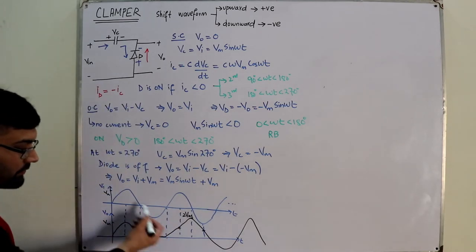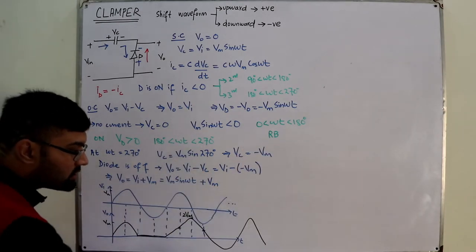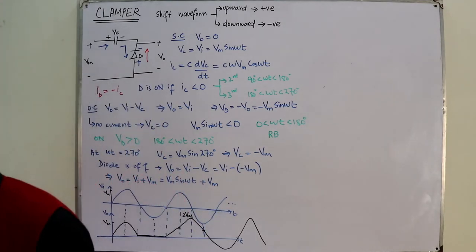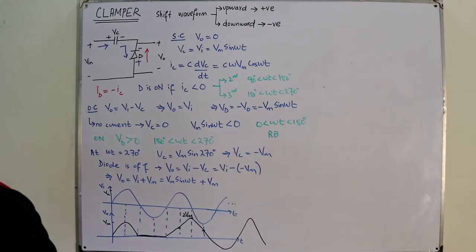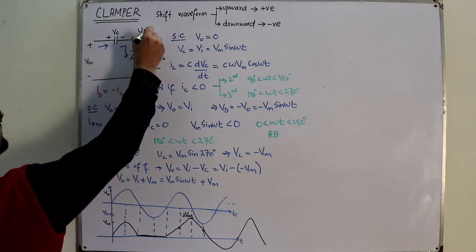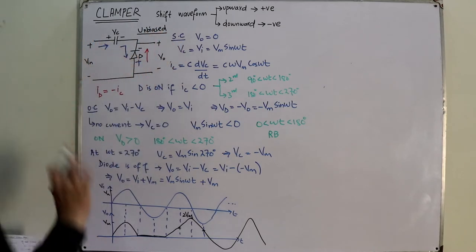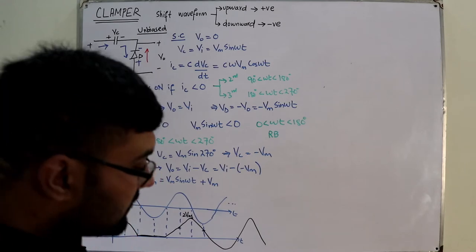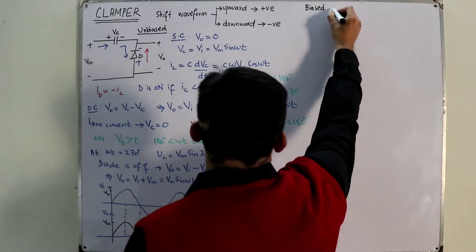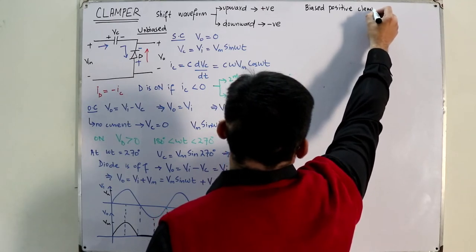Don't be confused — this is for the initial cycle; it may damp out in the second cycle. After that you would have a pure sinusoid with a peak value of 2Vm. This was the unbiased clamper because we have no external DC source — only the input source which is time-varying. Now let us introduce biasing. We have a biased positive clamper.